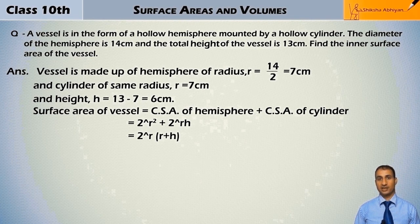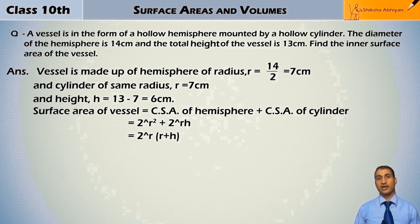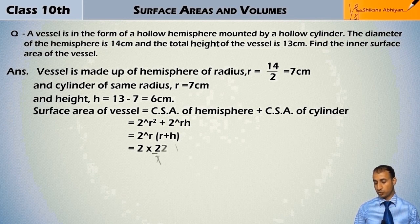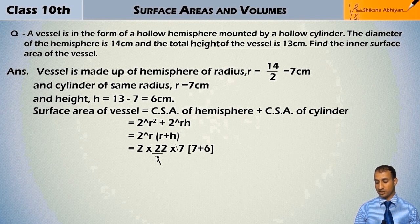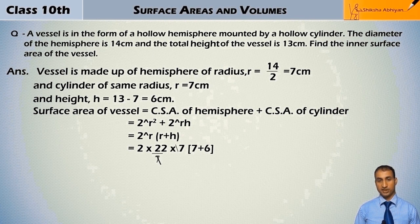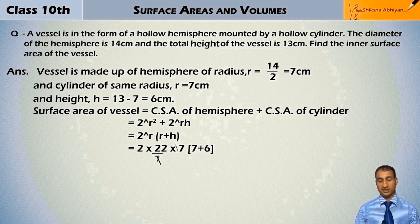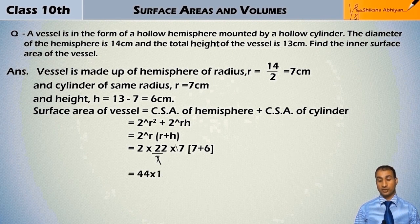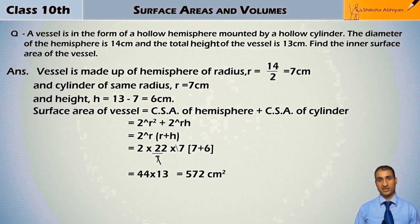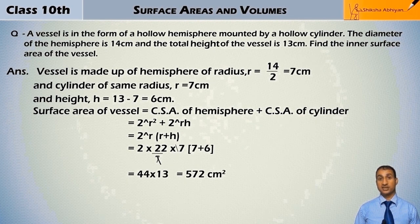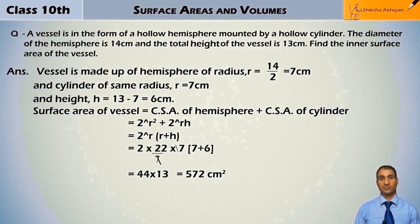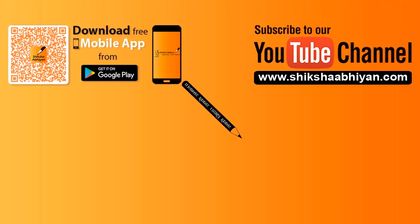Now put all the values of r and h: 2 × 22/7 × 7 × (7 + 6). The 7s cancel, 2 × 22 is 44, and 7 + 6 is 13. So 44 × 13 = 572 cm². This is our required surface area of the vessel. Question is completed.